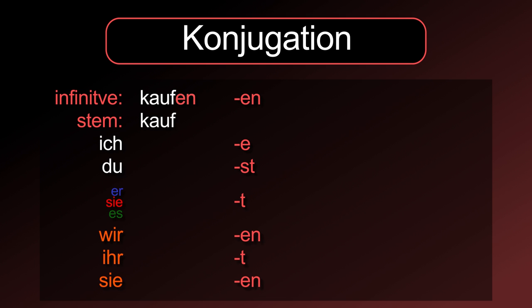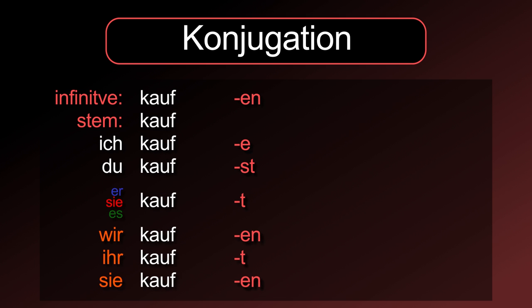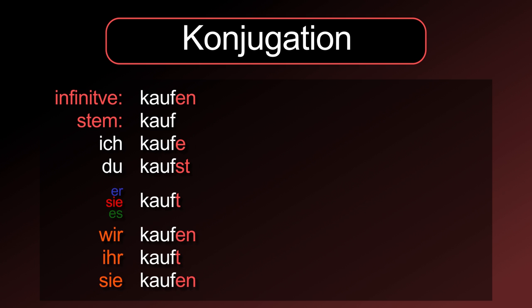These endings have to be placed behind the stem. Therefore, the conjugation for kaufen is: ich kaufe, du kaufst, er/sie/es kauft, wir kaufen, ihr kauft, sie kaufen. Wir and sie are easy to remember, because their form is always the same as the infinitive.